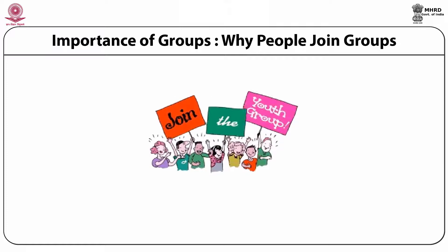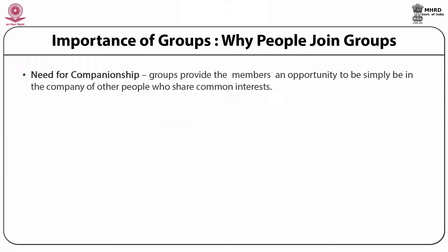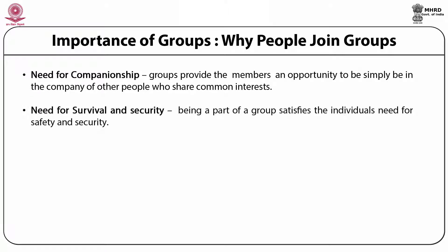Let us understand one by one what is need for companionship. The group provides the members an opportunity to simply be in the company of other people who share common interests. The need for survival and security — being a part of a group satisfies the individual's need for safety and security.